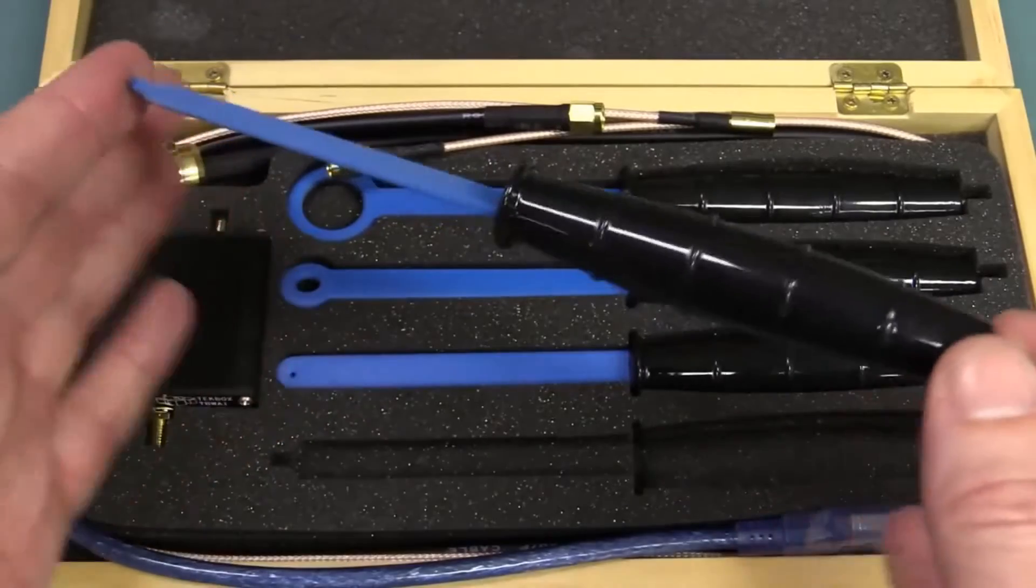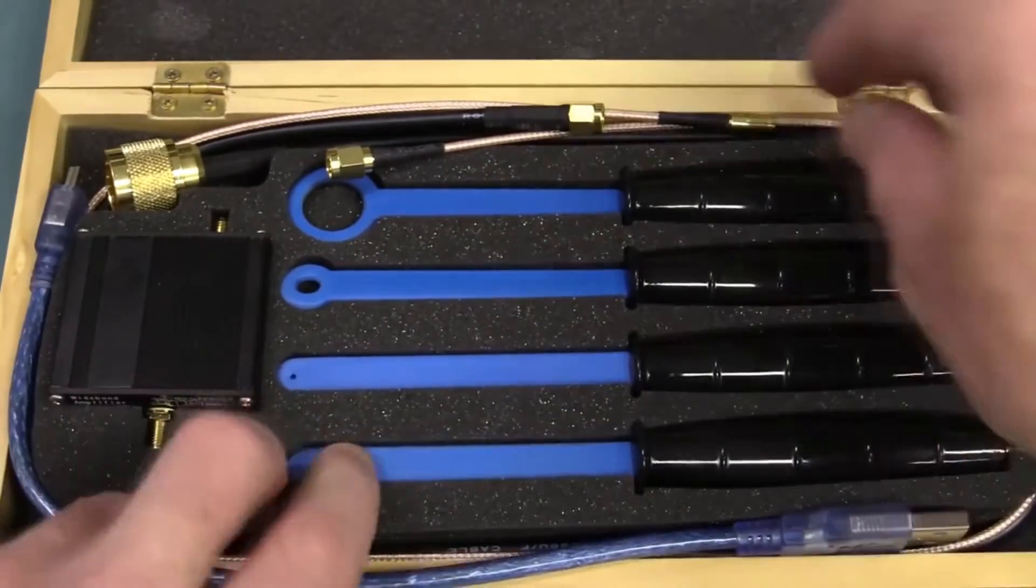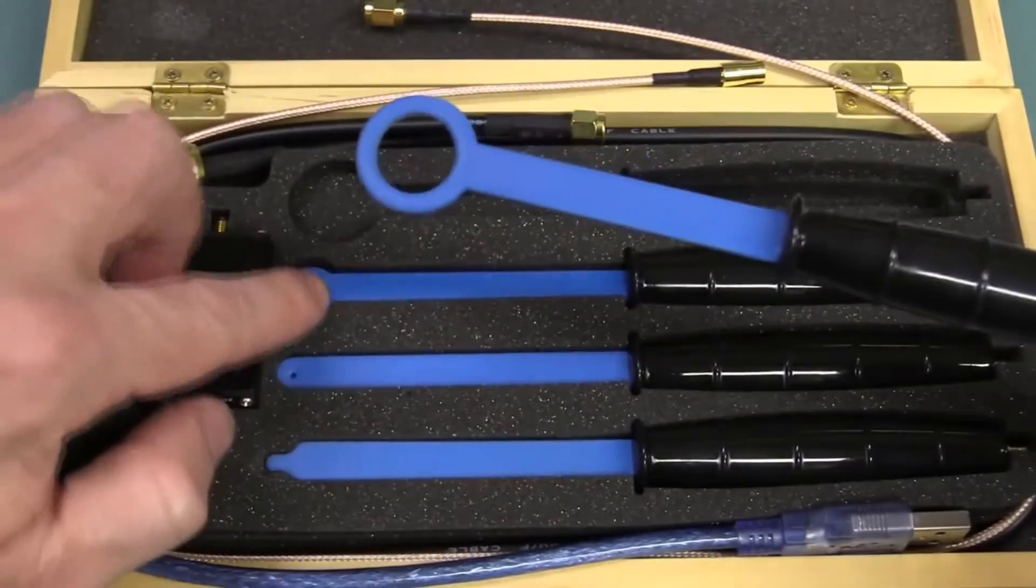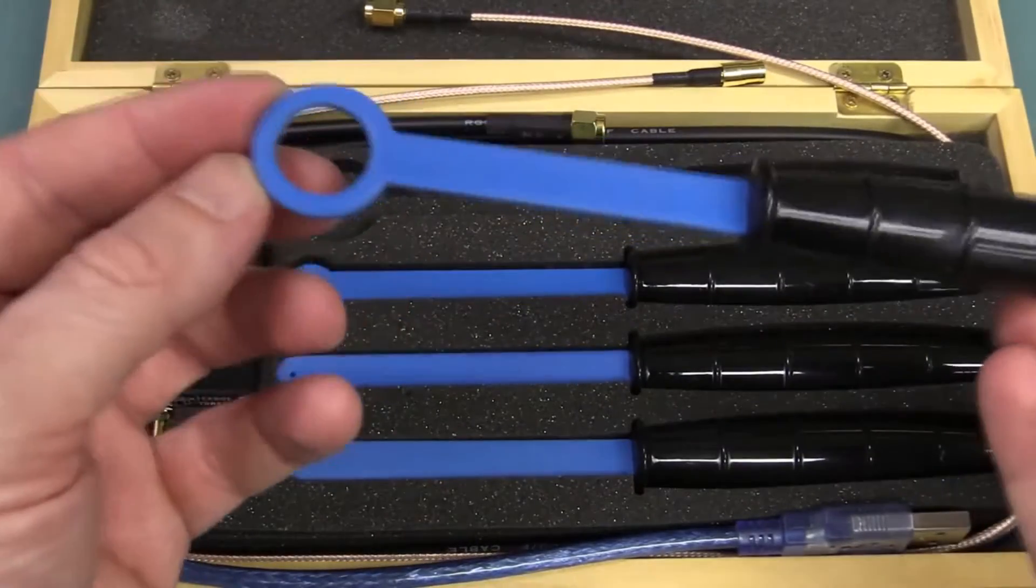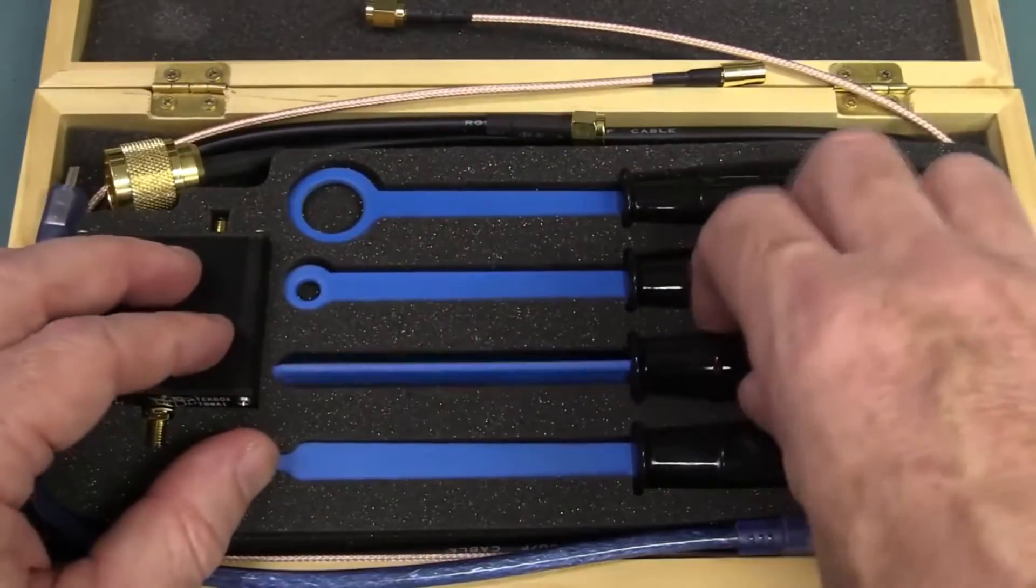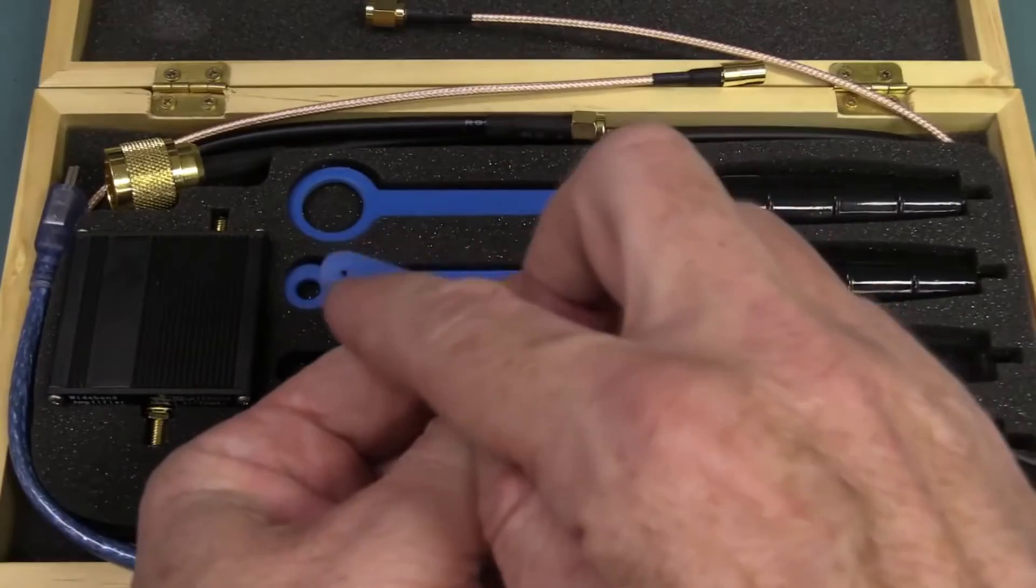So you can do your electric field measurements, and they're basically two separate tests. And the reason you get different size ones—I assume these are all your H-field ones—is that you get better coupling with the big ones, but with the smaller loop, this one's smaller, and this one's smaller again.